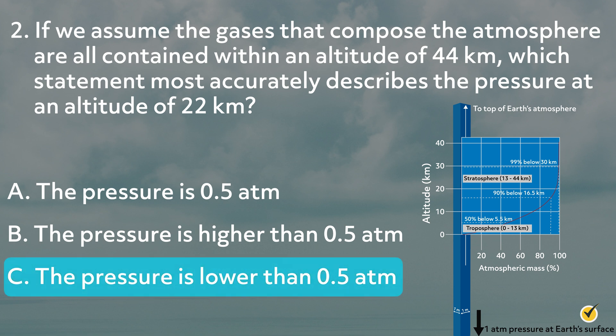The correct answer is C. The majority of the mass of our atmosphere is contained within the first 20 kilometers of the atmosphere, and the rest is quite thin. So by the time we get to 22 kilometers, the pressure will be much less than half of the total. Less mass above you equals less pressure.